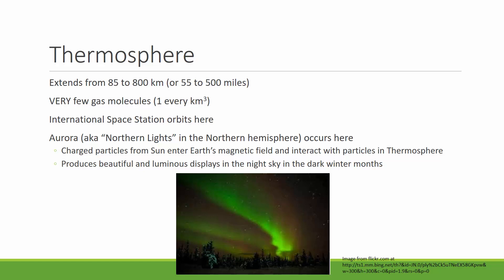The thermosphere extends all the way up to 500 miles or 800 kilometers from Earth's surface — a really huge, thick layer compared to the others — but it has very few gas molecules, maybe one gas molecule per cubic kilometer. This is where the International Space Station orbits, and it's also where the aurora borealis appears in the night sky. Charged particles from the sun enter Earth's magnetic field in this area and interact with particles in the thermosphere, producing those beautiful light displays.